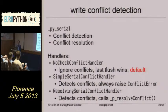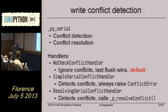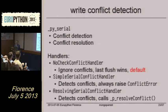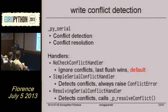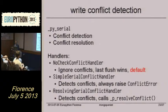We have three types of handlers in MongoPersist. The first is the default no-check conflict handler, which detects but then ignores any conflicts — last flush will win.